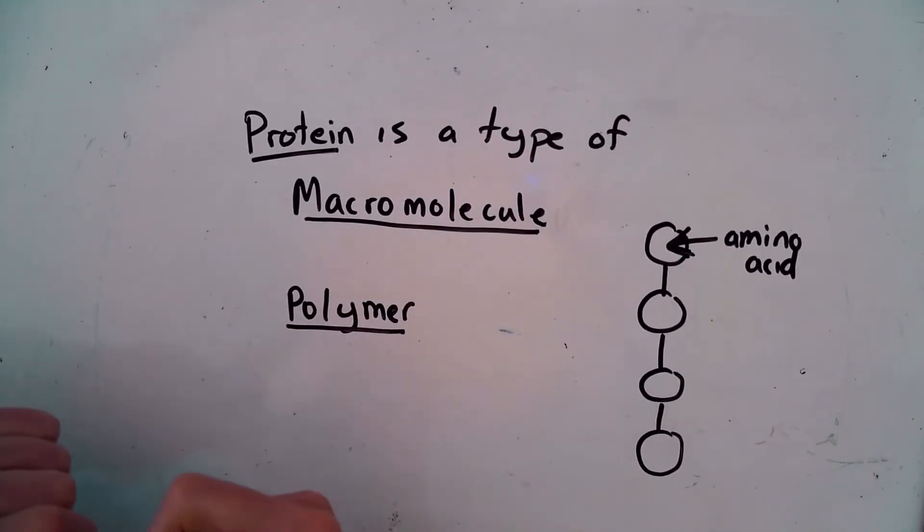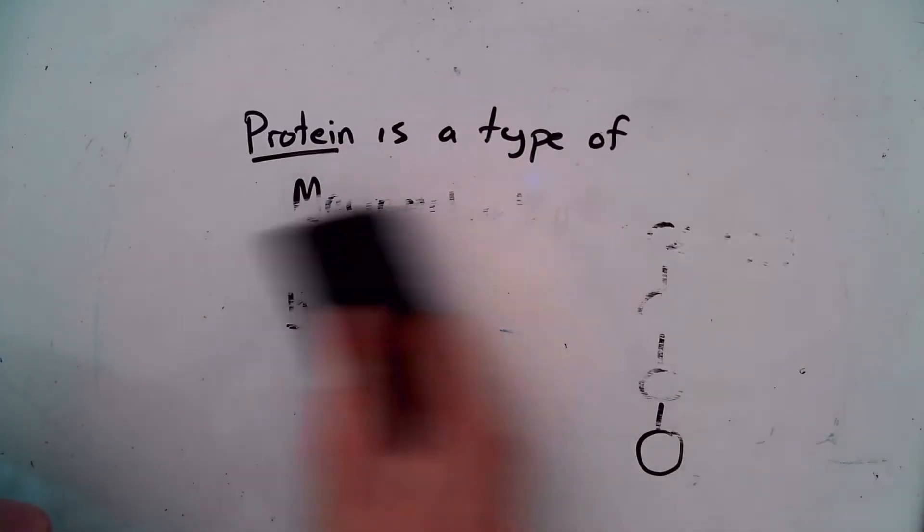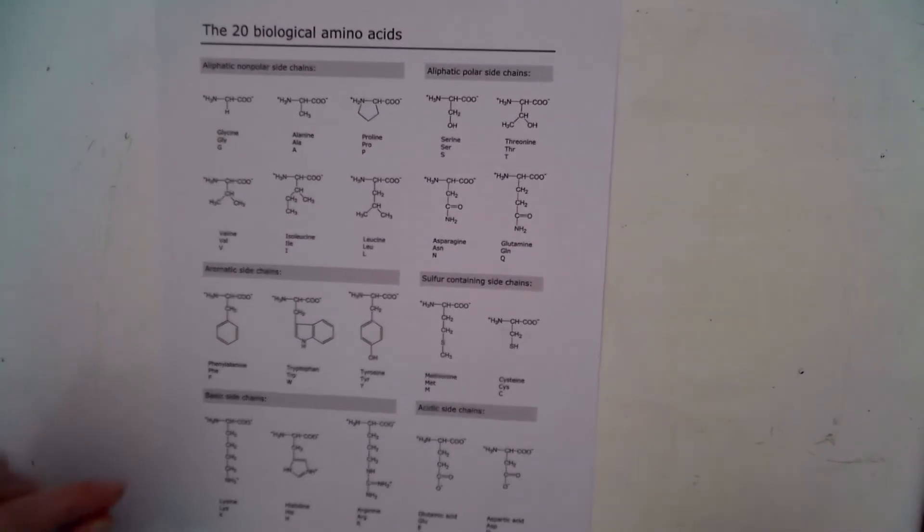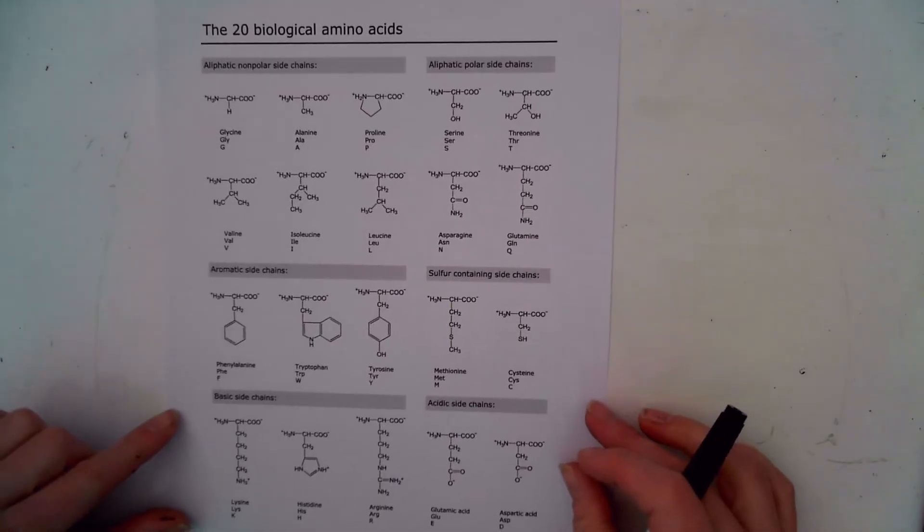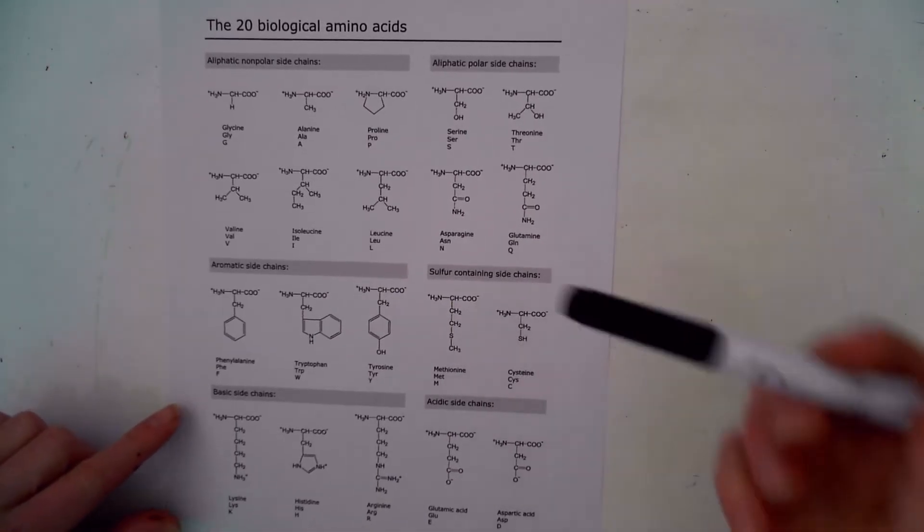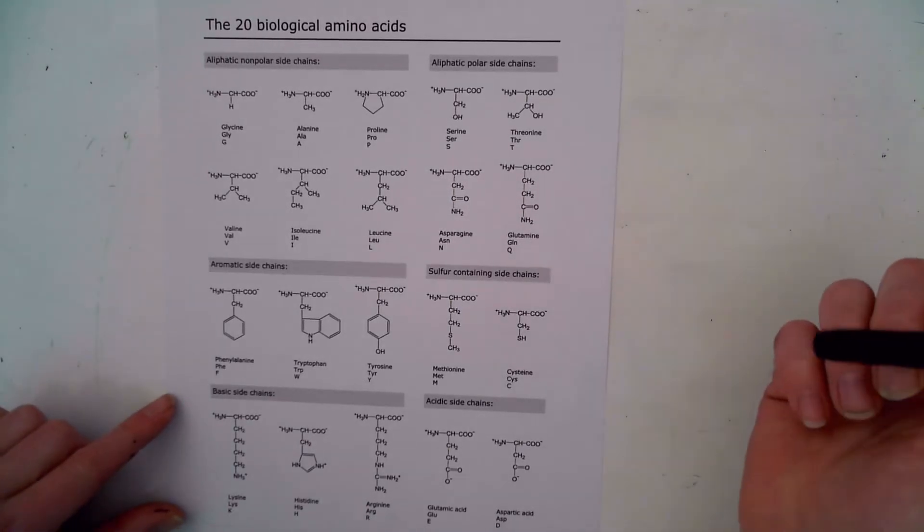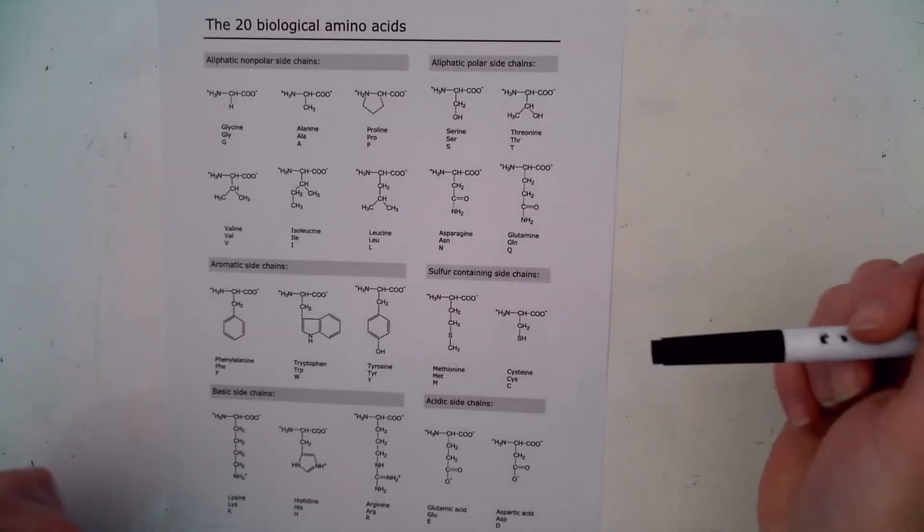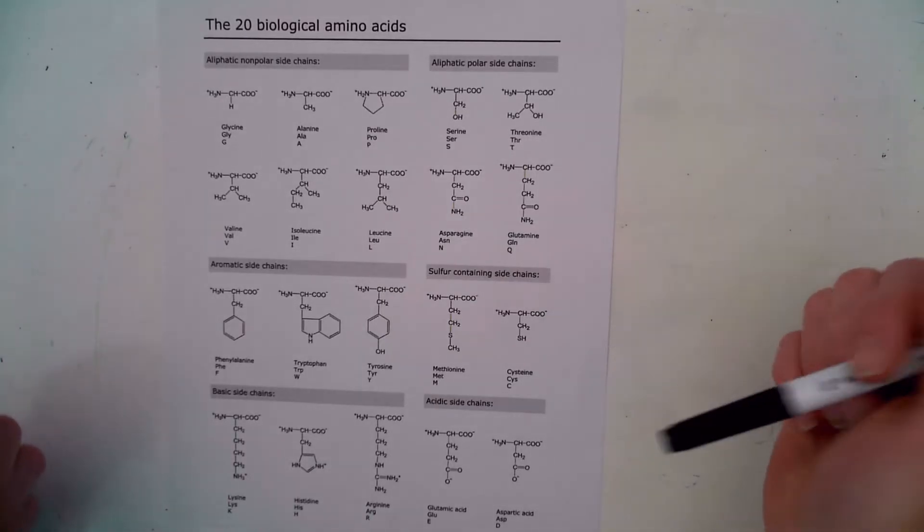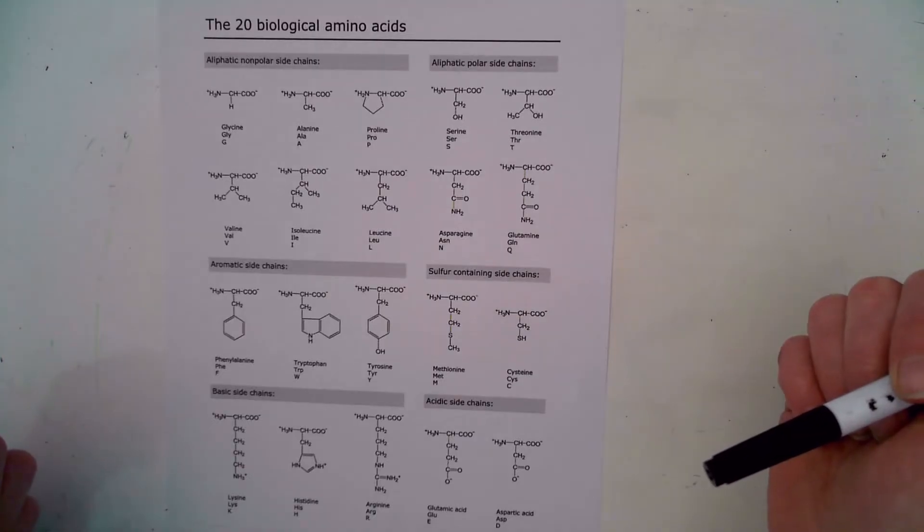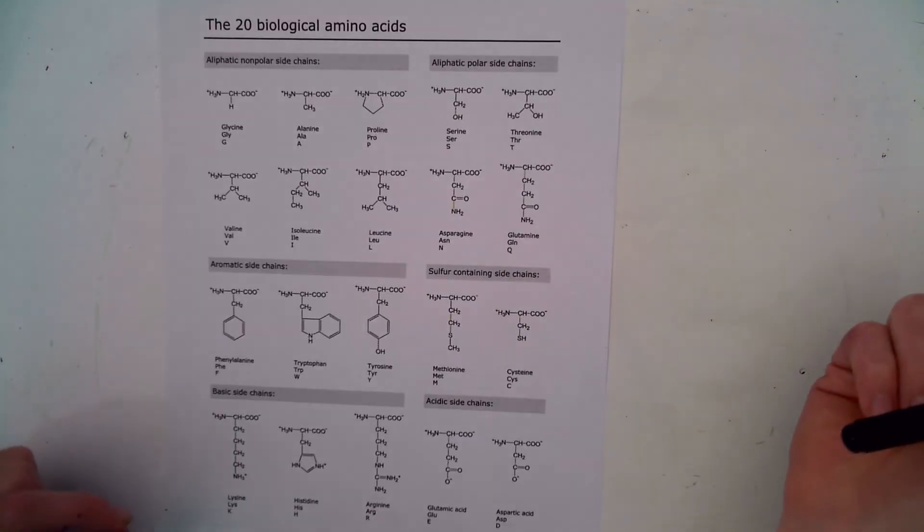Well what actually do amino acids look like? Well if you remember earlier in the year we did an activity where we sorted different molecules based on their chemical structure. And some of you had cards with molecules that looked a little like this. And you were able to see that these molecules should all be placed in one category because their chemistry is very similar. What part of their chemistry is similar?